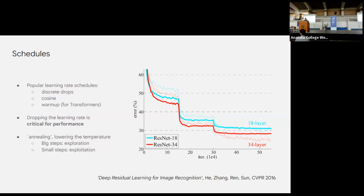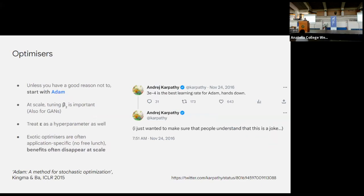Q&A: A question about Adam vs. AdamW — yes, in general AdamW has kind of replaced Adam as the default. If you're using weight decay, AdamW is definitely the way to go. On beta₂ at scale: it becomes helpful in the regime of billions of parameters, but adversarial networks even at smaller scales can benefit from tuning it. The tendency is to tune the learning rate and ignore these other parameters, but β₂ is actually more important to tune in my experience.